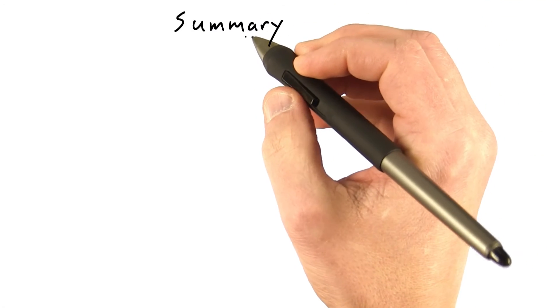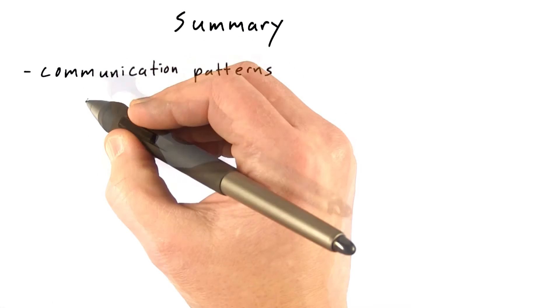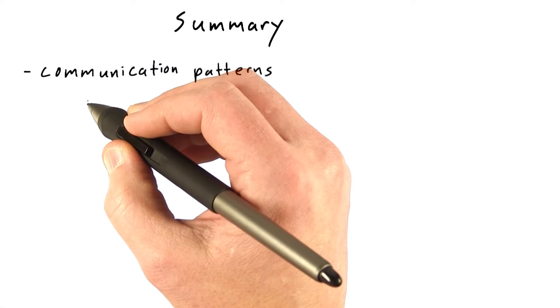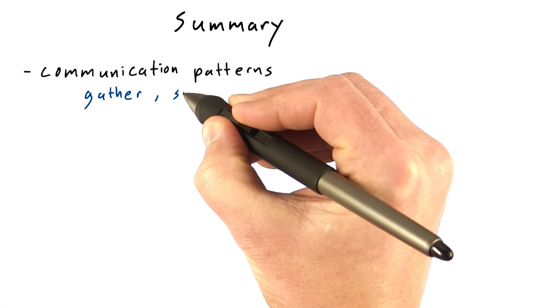So let's wrap up and summarize some of the things that we've learned. We've learned about parallel communication patterns, going beyond the simple map operation that you saw in unit one, to encompass other important communication patterns like gather, scatter, stencil, and transpose.